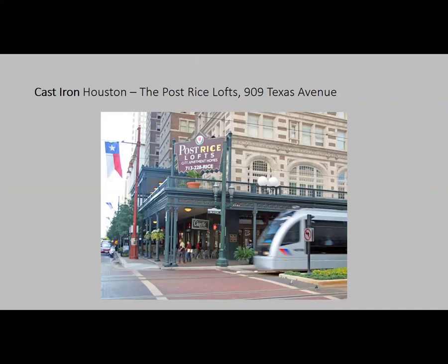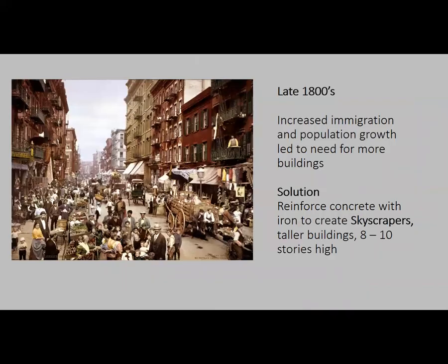We have cast iron and wrought iron in Houston. Cast iron — that's iron poured in a mold — can be seen right down the street from the school at the Post Rifle Lofts on Texas Avenue, where the light rail runs alongside. Not only is this cast iron, but it also has examples of Corinthian columns, and there's another architectural feature on the scavenger hunt that I'm not going to tell you about.